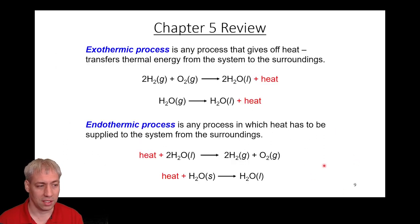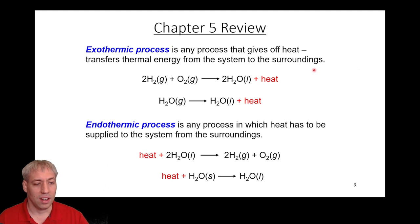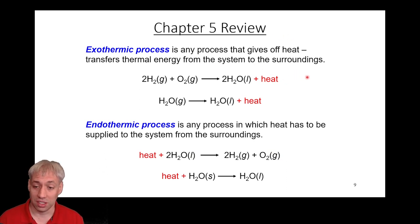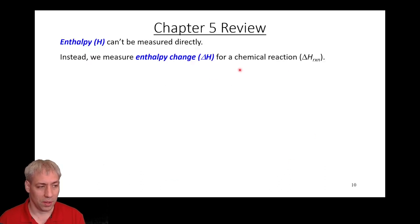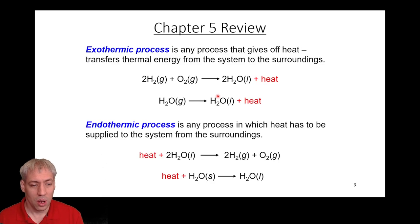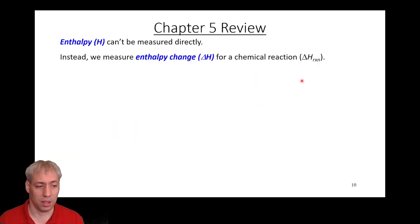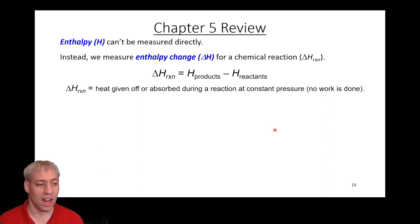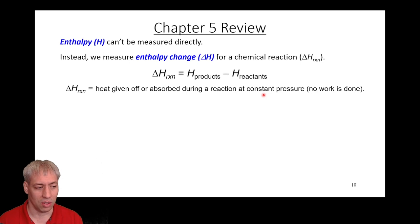We've talked about exothermic and endothermic in chapter 13: is heat a product or is it a reactant? For an exothermic process, heat is a product — that's a negative delta H. For an endothermic process, heat is a reactant — that's a positive delta H. The thing we're talking about there is enthalpy. Basically, if we know where we started with reactants and where we're going with products, each has a certain energy associated with the bonds and everything that goes into making those molecules.